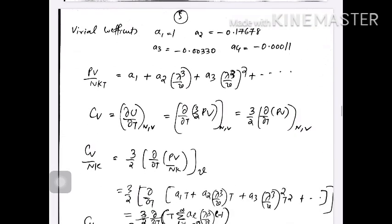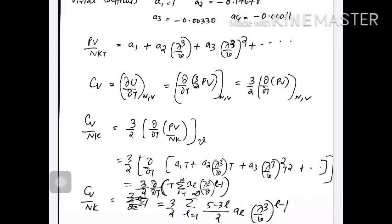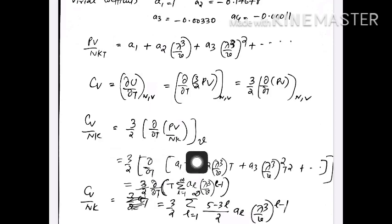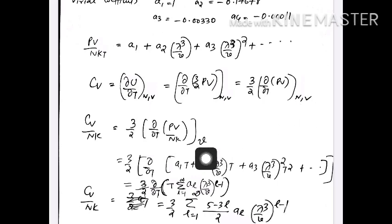Once we have that equation, we can have an expression for specific heat capacity at constant volume. Specific heat capacity at constant volume, C_V, equals ∂U/∂T, which is (3/2) ∂/∂T of pV. So C_V/Nk is (3/2) ∂/∂T of pV/Nk, where the number of particles and volume are constant, or in terms of specific volume, small v is constant.